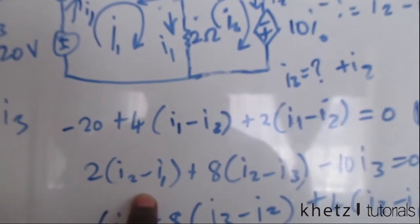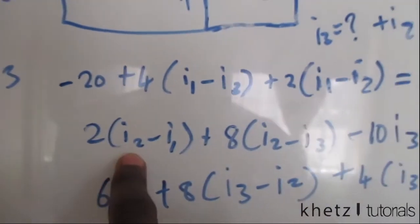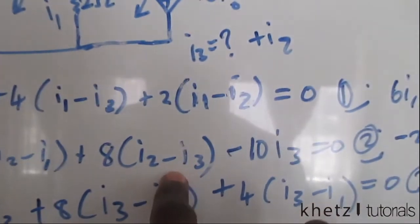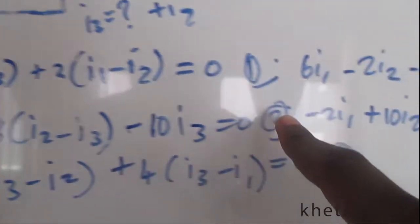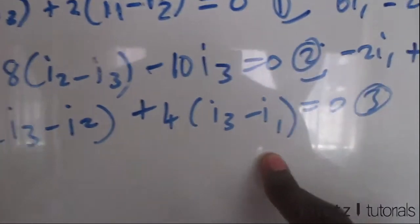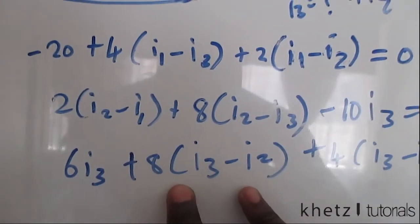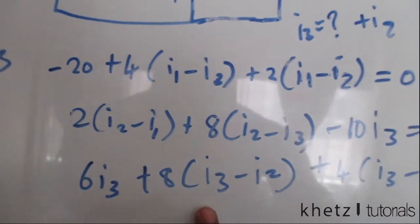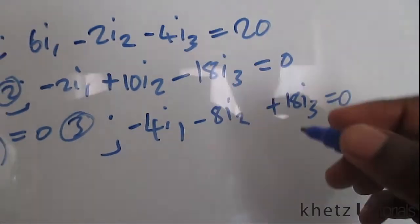For the second equation, focusing on I.1 we only have negative 2 I.1. For I.2, we have 2 plus 8 which is 10 I.2. For I.3, we have negative 8 and negative 10, giving negative 18 I.3. No constants, so the second equation is: negative 2 I.1 plus 10 I.2 minus 18 I.3 equals 0. For the third equation: I.1 has only negative 4, so negative 4 I.1. I.2 has negative 8 I.2. For I.3, we have 6 plus 8 which is 14, plus 4, which is 18 I.3. So: negative 4 I.1 minus 8 I.2 plus 18 I.3 equals 0.